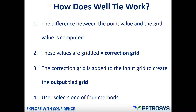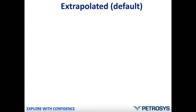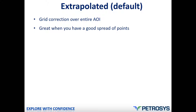There are four methods of Well Tie in Petrosys available for the user to select. The first one is the extrapolated method and this is the default method of Well Tie in Petrosys. It makes grid correction over the entire area of interest and it's very good when you have a good spread of points - if your points are spread evenly across the entire area of interest, so there are no large areas without point control, for example at the edges of the grid.